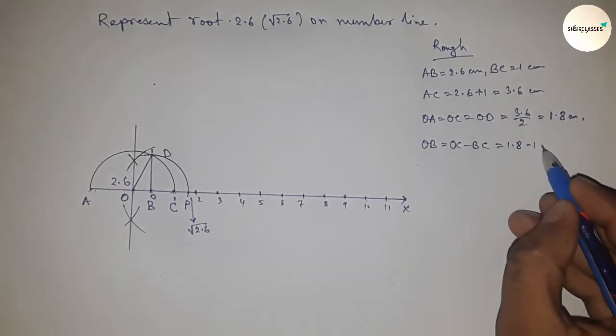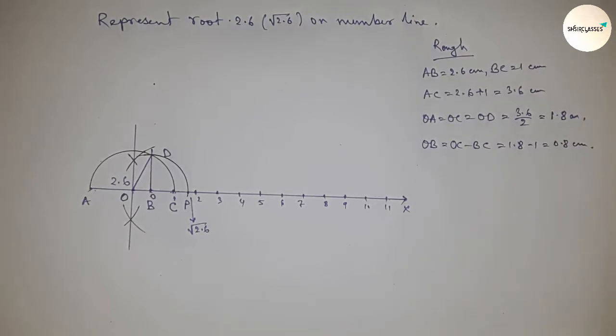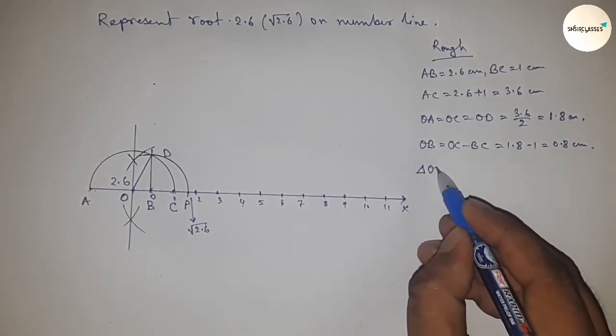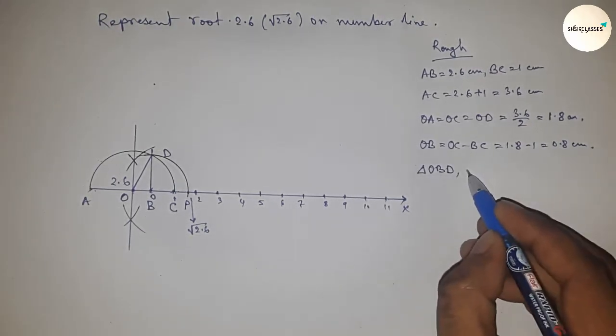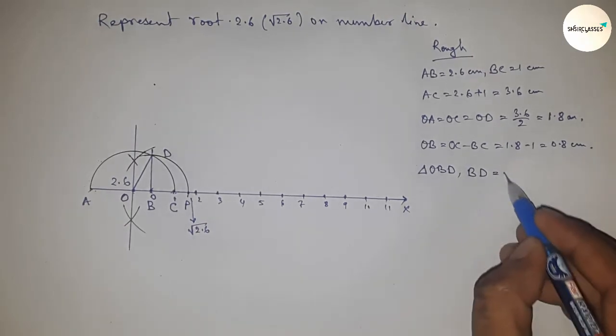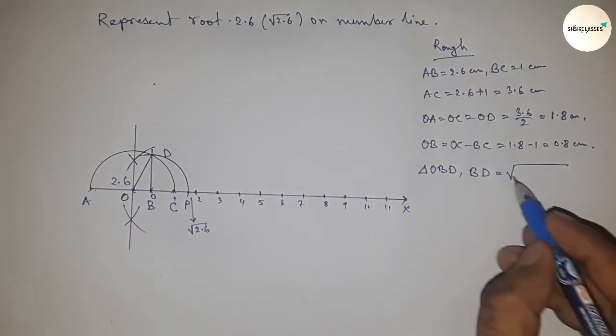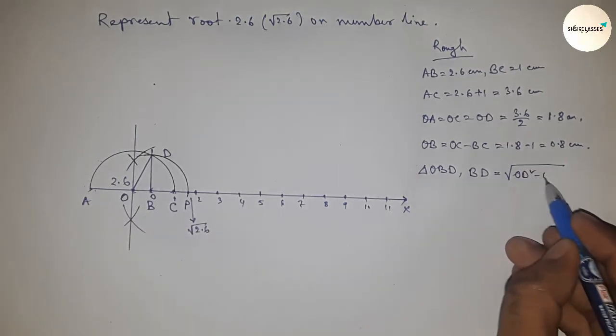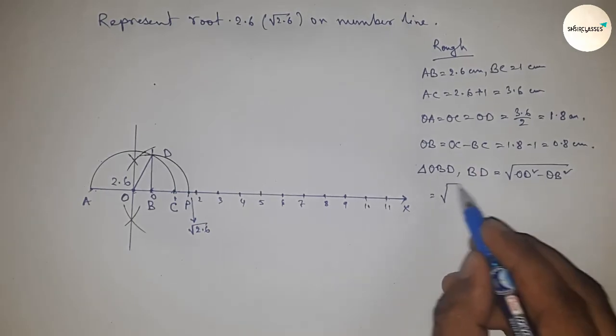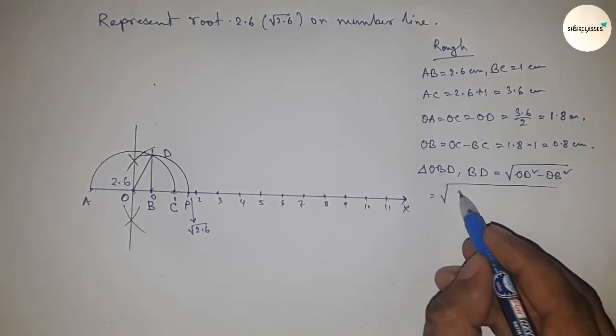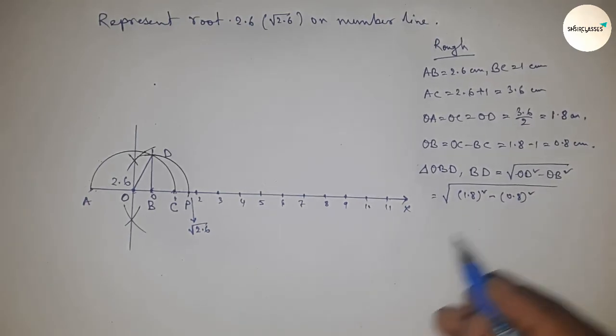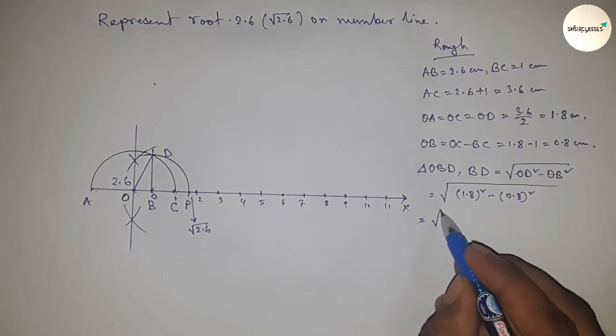Now from right angle triangle OBD, we can write BD equals, by Pythagoras theorem, root over hypotenuse square minus base square. So OD square minus OB square. Now putting the value of OD and OB, so this is 1.8 whole square minus 0.8 whole square.